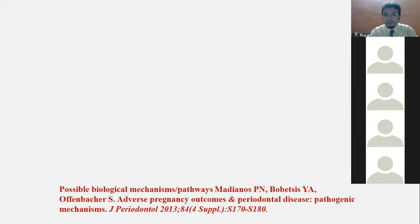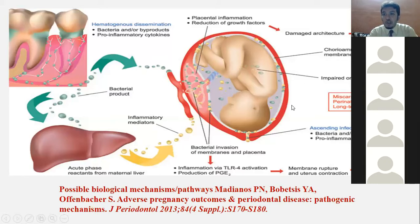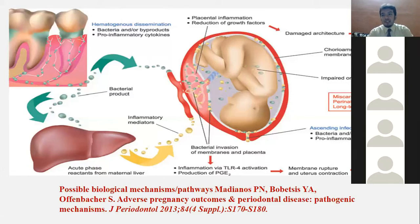This is a very important classic diagram contributed by Offenbacher in 2013. It shows that infection leads to bacterial products and pro-inflammatory cytokines which either directly enter the placenta or go to the liver and release acute phase proteins. When they enter the placenta, they cause chorioamniotic infection in the membrane, generating inflammatory mediators. This leads to prostaglandin production, membrane rupture, and premature labor. Infections can also trigger growth factor release and platelet thrombi formation, leading to preeclampsia.